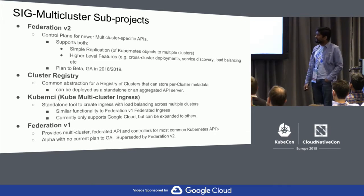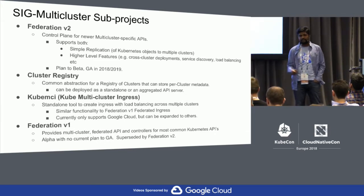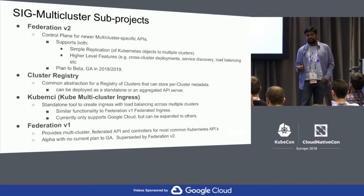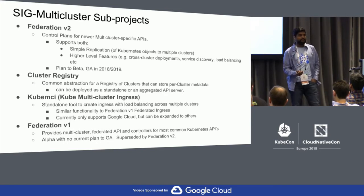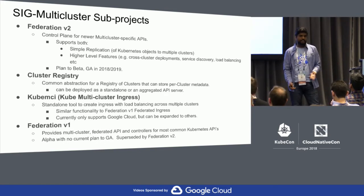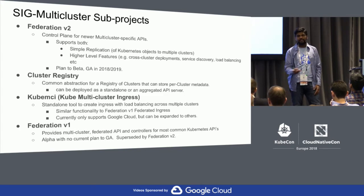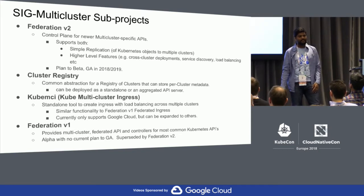Here is a high-level list of all our subprojects. We are working on Federation V2, which is the next version of Federation V1. With Federation V1, what we were trying was to use the Kubernetes API to solve multi-cluster issues — like deployments across multiple clusters — using the same single-cluster API expanded to multi-cluster.